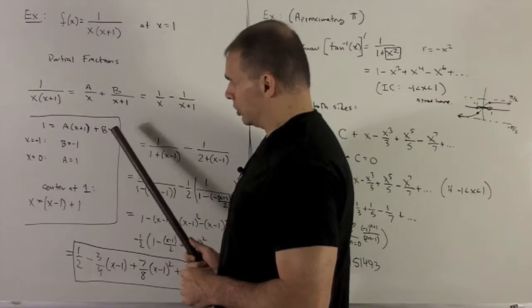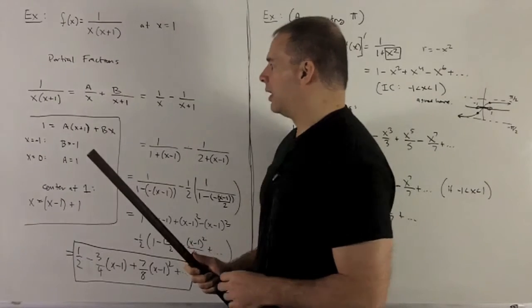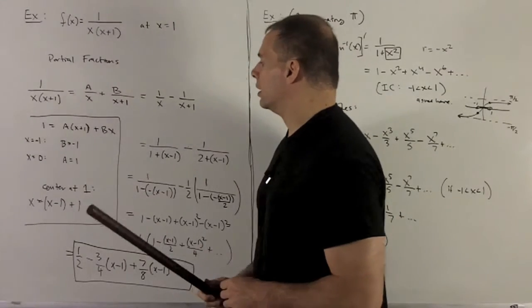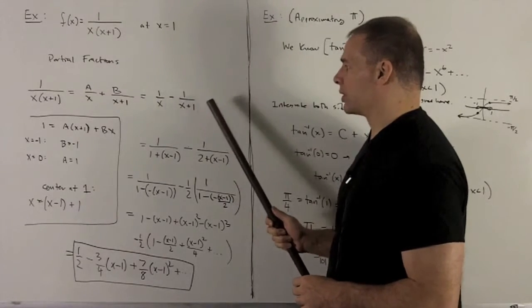If I target the b term here, I'm going to let x be equal to 0, and then that's going to leave me with a equal to 1. So I can rewrite this as 1 over x minus 1 over x plus 1.